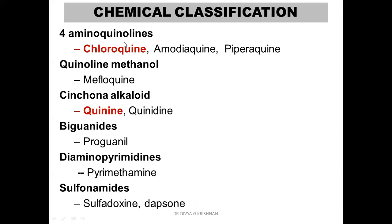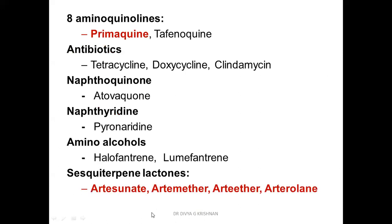The chemical classification is as follows: 4-aminoquinolines — chloroquine; quinoline methanols — mefloquine; cinchona alkaloids — quinine; biguanides — proguanil; diaminopyrimidines — pyrimethamine; sulfonamides — sulfadoxine, dapsone; 8-aminoquinolines — primaquine; antibiotics — tetracycline, doxycycline, clindamycin; naphthaquinone — atovaquone; naphthyridine — pyronaridine; amino alcohols — halofantrine, lumefantrine; and sesquiterpene lactones — artesunate, artemether, arteether, arterolane. These last ones are all called artemisinin derivatives.